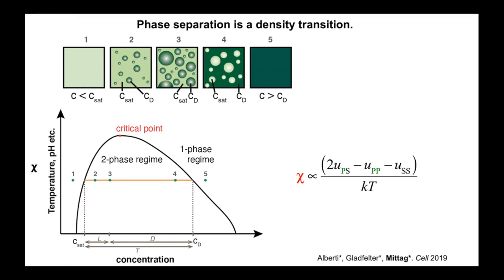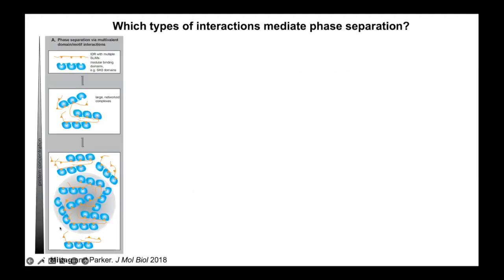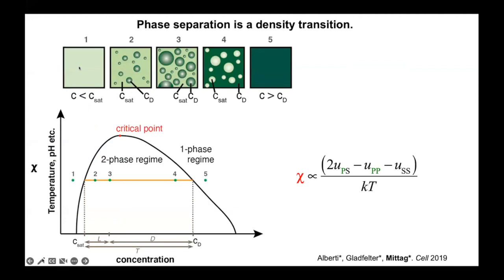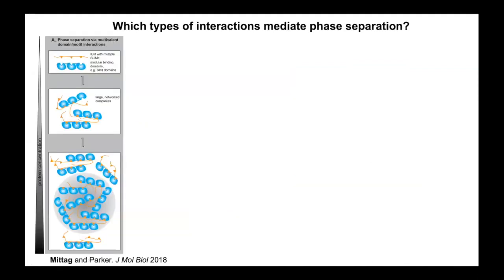When we think about proteins, we think about more specific interactions. We understand the phase behavior of multivalent domain-motif type systems very well — for example, a protein containing repeats of SH3 domains interacting with a binding partner with repeats of binding motifs. This is described in a seminal paper by Mike Rosen's lab. When they interact, they form large non-covalently networked complexes that have lower solubility than the individual protein molecules, and these will demix from solution and form networked dense phases.